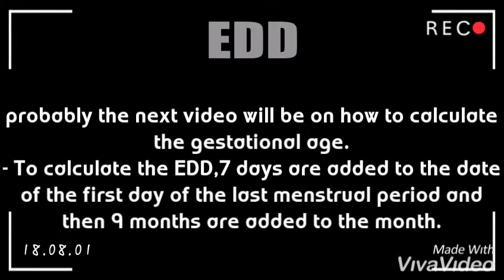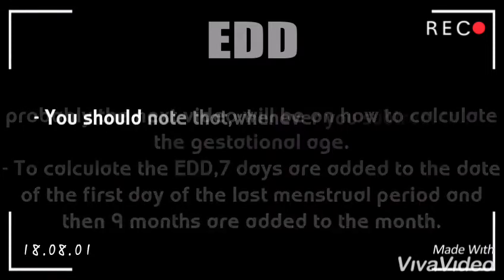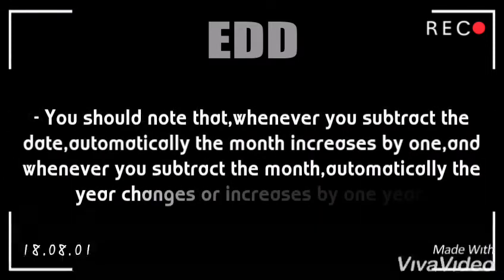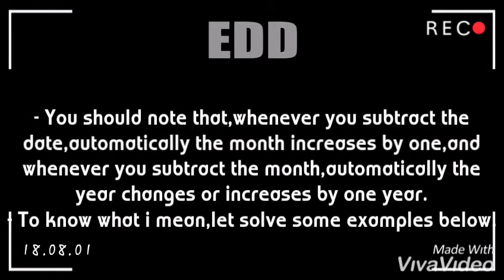To calculate the expected date of delivery, seven days are added to the date of the first day of the last normal menstrual period, and then nine months are added to the month. Note that whenever you subtract the date, the month automatically increases by one, and whenever you subtract the month, the year automatically increases by one.